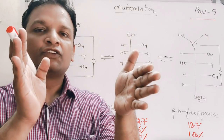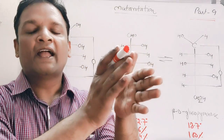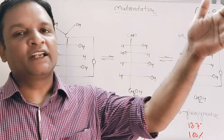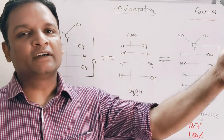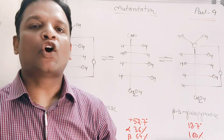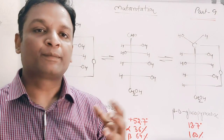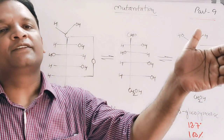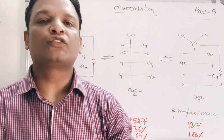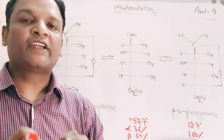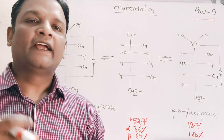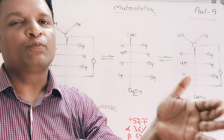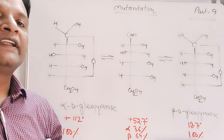So the alpha form slowly changes its specific rotation until it reaches the constant value of +52.7°. Similarly, if I take beta-D-glucose and dissolve it in water, beta-D-glucose initially shows a rotation value of approximately +18.7°. This +18.7° value changes slowly, increasing toward a constant value of +52.7°.